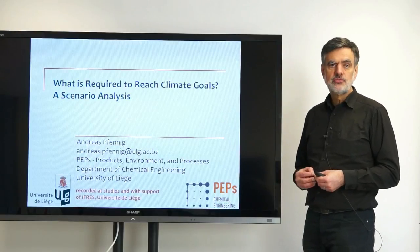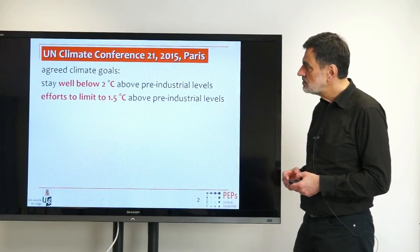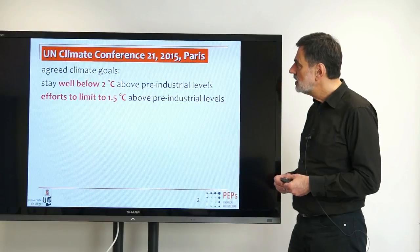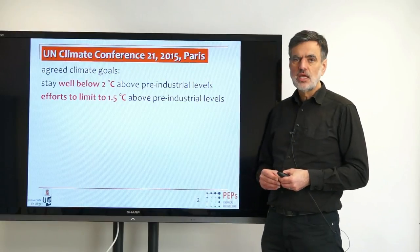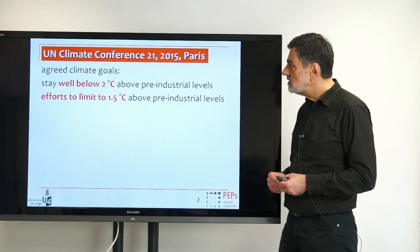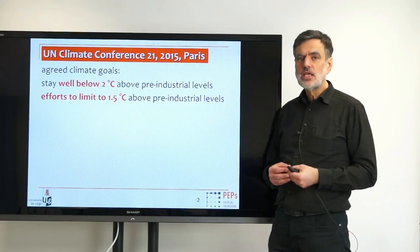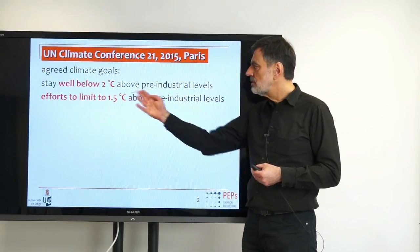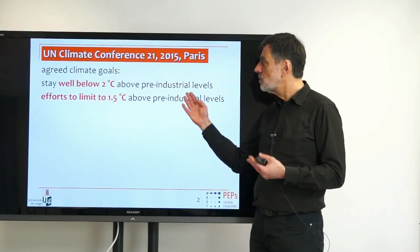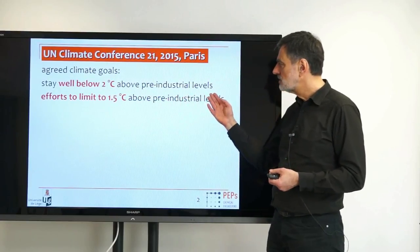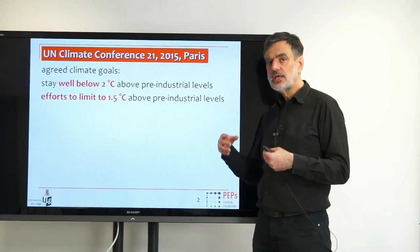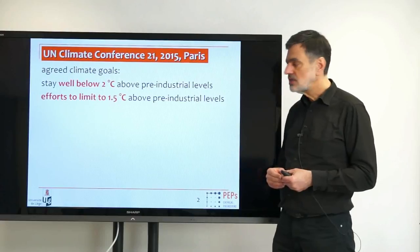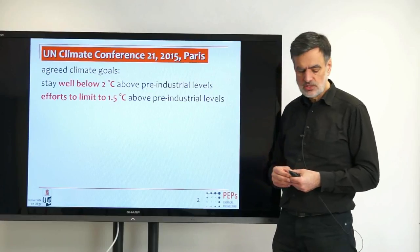The starting point for this entire consideration was the result of the United Nations climate conference that took place at the end of 2015 in Paris. There, many nations agreed on two goals: one, to stay below 2 degrees Celsius above pre-industrial levels; and two, to take significant efforts to limit warming to even below 1.5 degrees Celsius above pre-industrial levels.